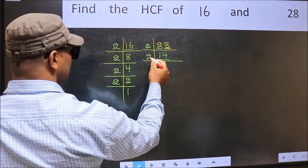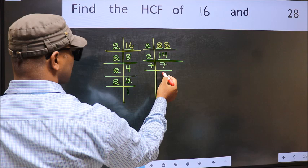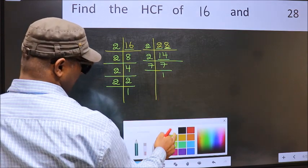Now, 14 is 2 times 7. 7 is a prime number, so 7 times 1 is 7.